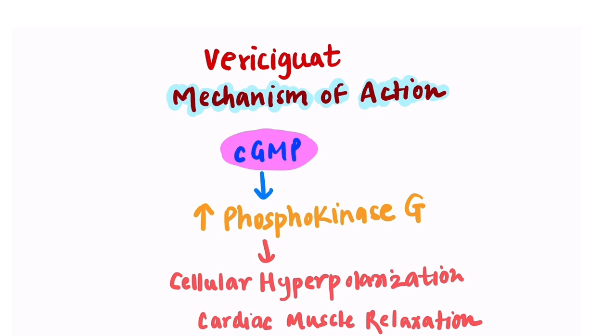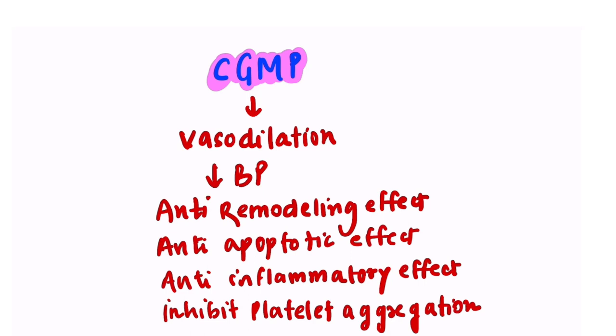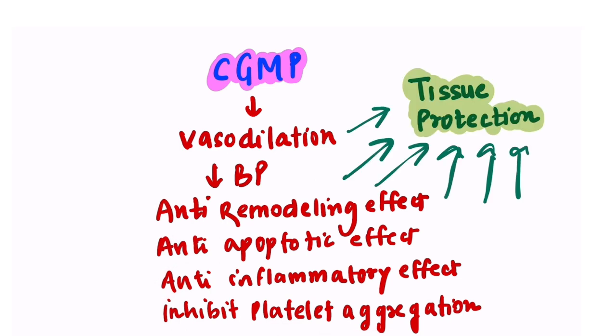But before that, we should know something about this molecule that is cyclic GMP. This cyclic GMP increases phosphokinase G, which causes cellular hyperpolarization and cardiac muscle relaxation. So by this action, cyclic GMP causes vasodilation and decreases blood pressure. Along with this, it has other important functions like anti-remodeling effect, anti-apoptotic effect, anti-inflammatory effect, and it inhibits platelet aggregation. And by all this action, it has a very important function of tissue protection.